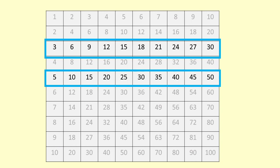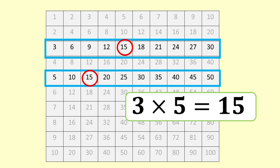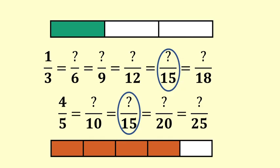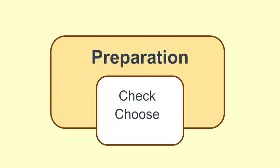The first number that appears in both the 3 times table and the 5 times table is 15. One method to find a common denominator that always works is to multiply the two denominators — in this case 3 times 5 equals 15. That number is guaranteed to be compatible to both fractions, though you'll see later why you might not want to do that all the time. We choose 15 as our common denominator.